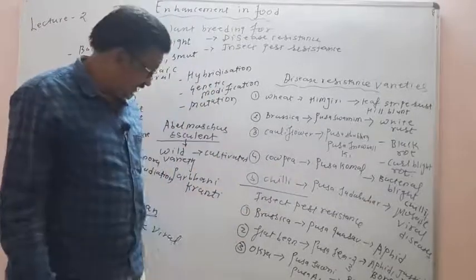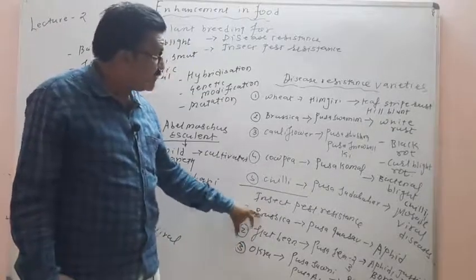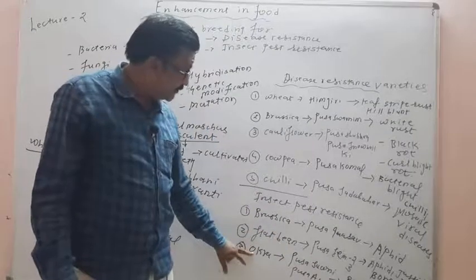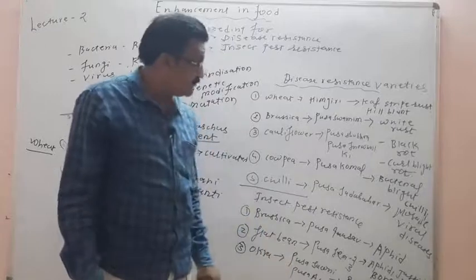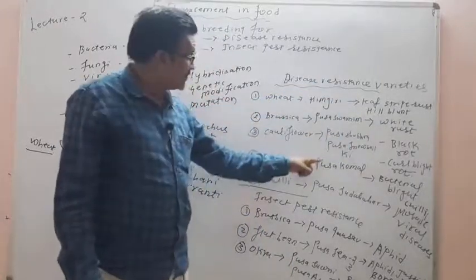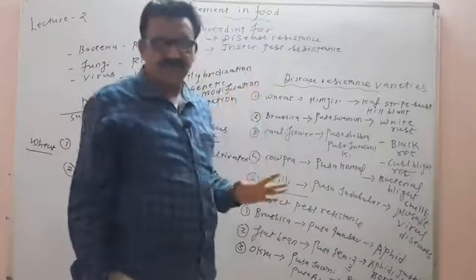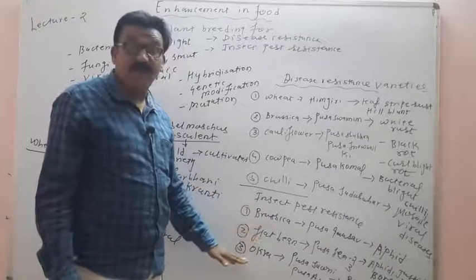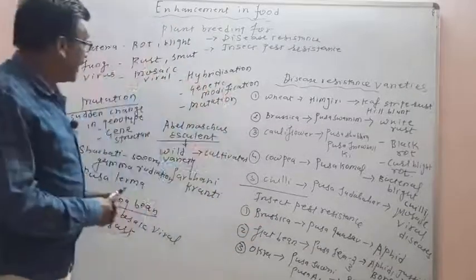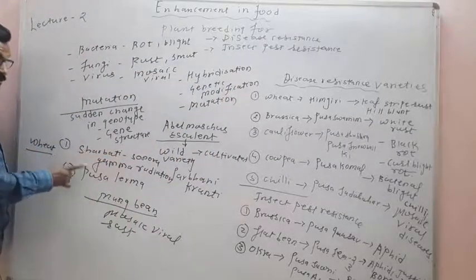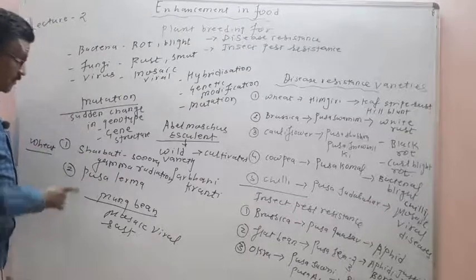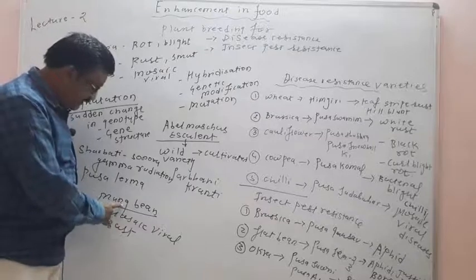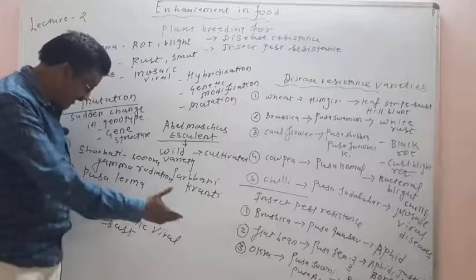For insect pest resistance, Brassica has Pusa Gaurav, flat bean has Pusa Sem 2 and Pusa Sem 3, and okra (bhindi) has Pusa A4. By mutation, M.S. Swaminathan produced the wheat varieties Sharbati Sonora and Pusa Lerma. In mung bean, mutation was used to develop varieties showing resistance against mosaic viral disease and rust diseases.